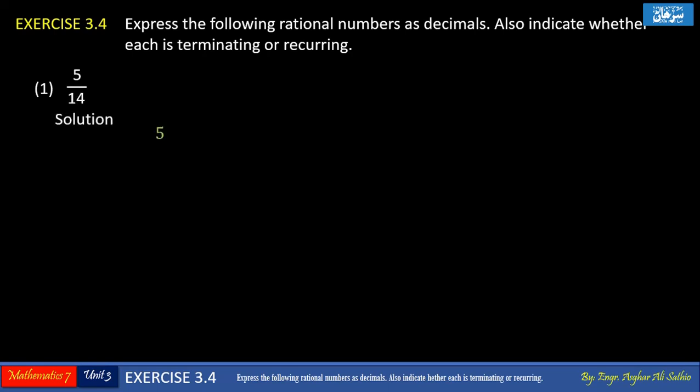Problem number 1: 5 upon 14 — we have to divide 5 by 14. As 14 cannot divide 5, we put a decimal in the answer place and put 0 on the right of 5, making it 50. When we multiply 14 with 3 we get 42, and when we subtract 42 from 50 we get 8.